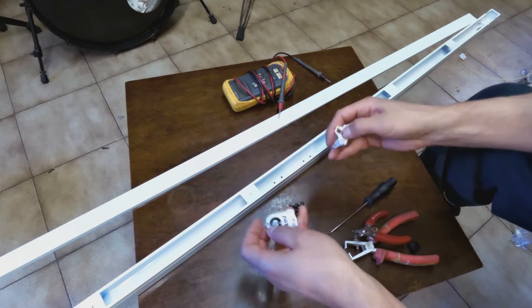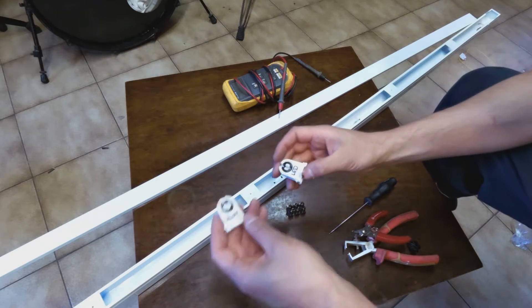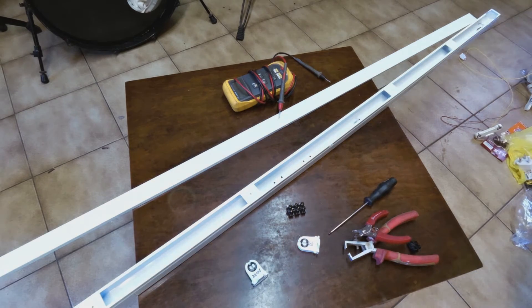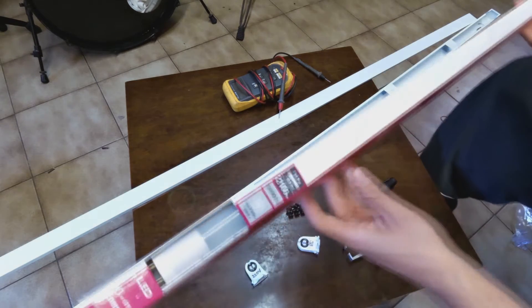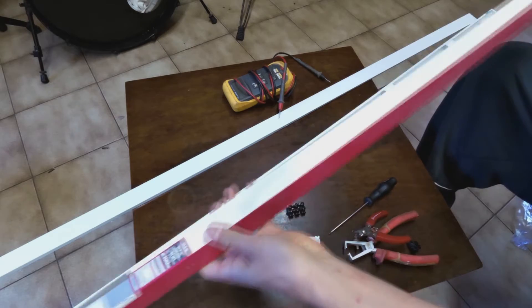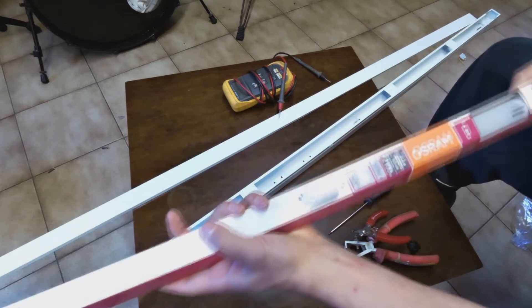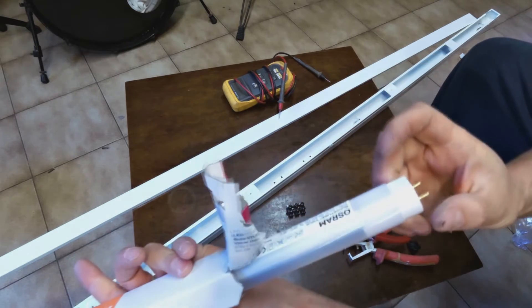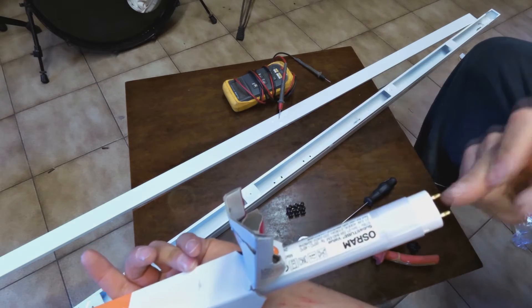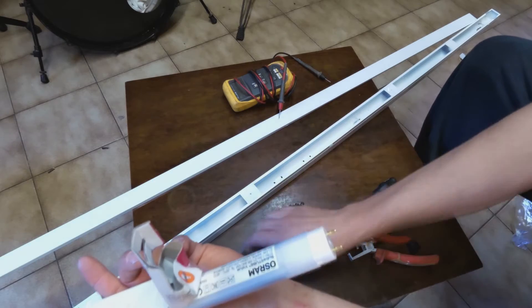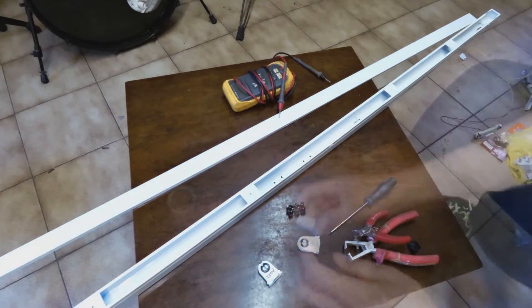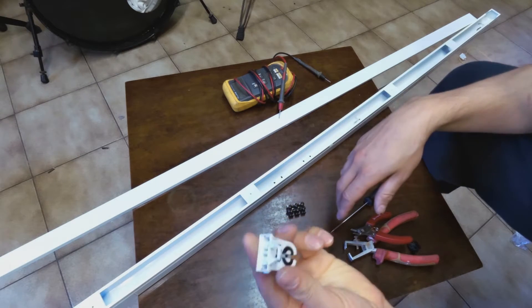Now for LED tubes you only need power on one side of the tube. For example, here I have an Osram globe and you'll see that only one side is actually requiring power. The other side is actually just a dummy. So we only need to wire the supply to the one fitting, so that's why this is actually going to be really quick.